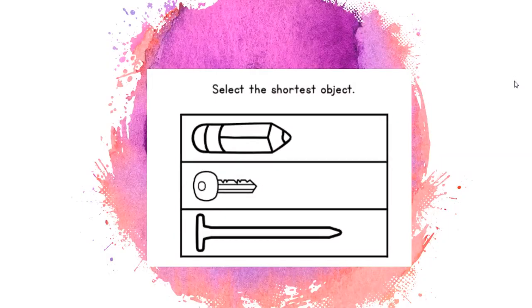Which one is the shortest, the pencil, the key, or the nail? Which one is the shortest? The key is the shortest.